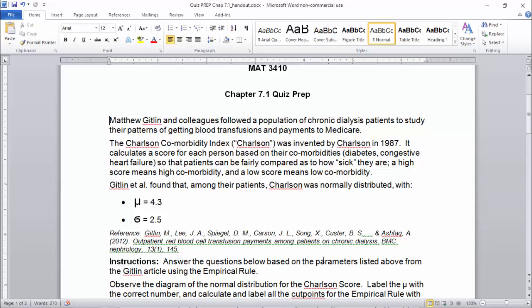But one thing that caught my eye was that they use the Charlson comorbidity index, which was invented by Charlson in 1987, when I was 16. So this calculates a score for each person based on their comorbidities, like diabetes, congestive heart failure, because what places want to always compare is how sick their patients are, but patients always have different problems.